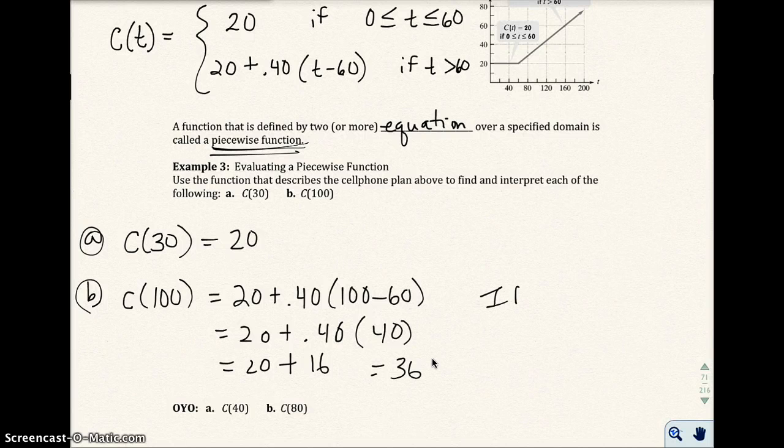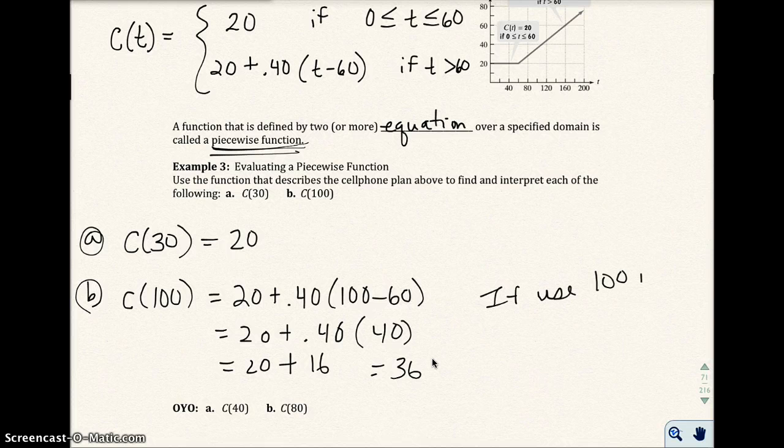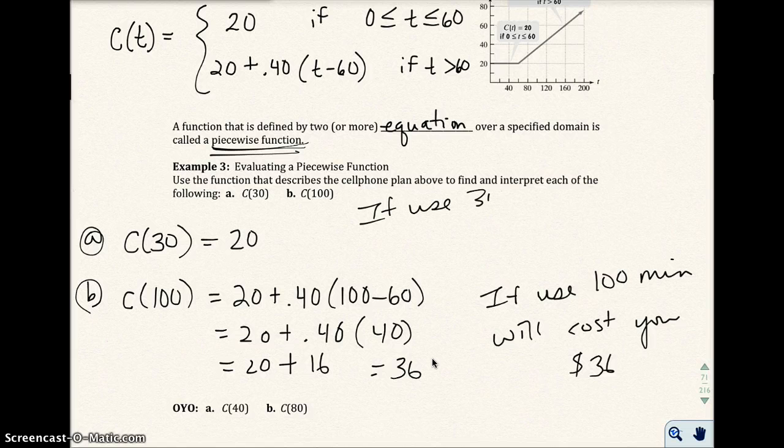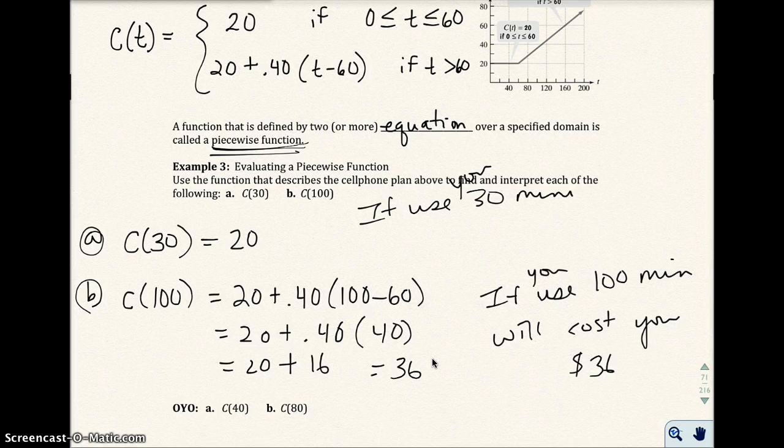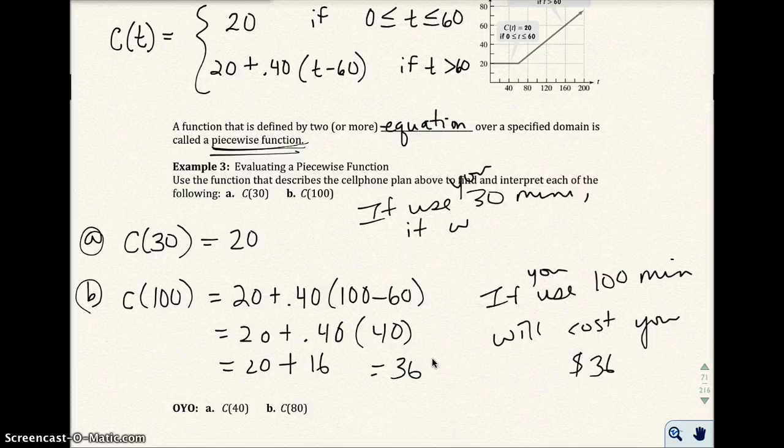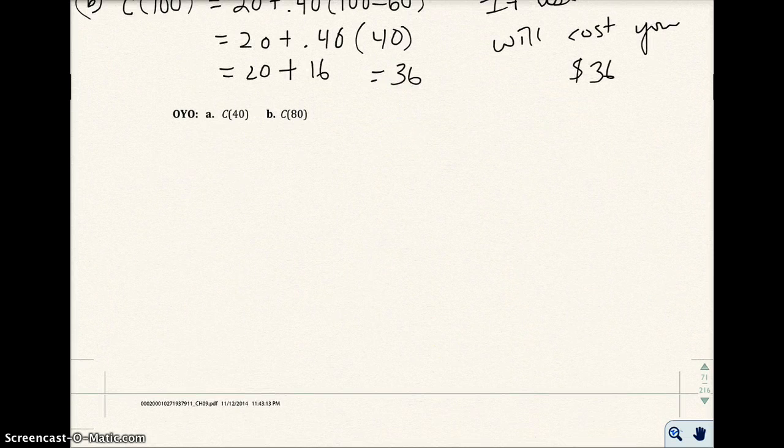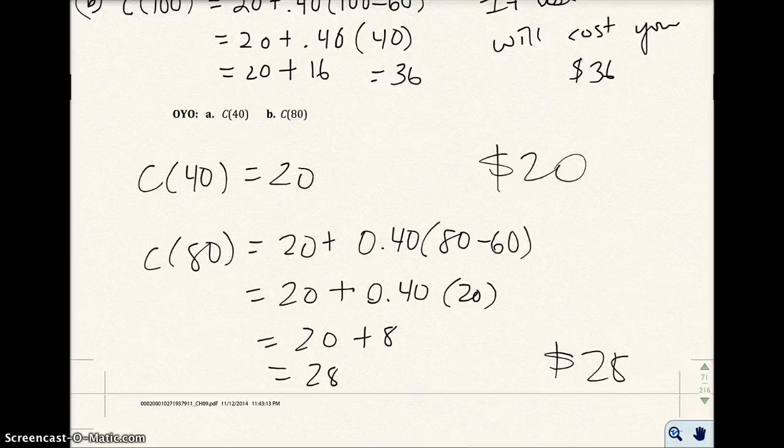You're going to pay $0.40 for each additional minute above the 60. That's the 40 minutes, that's where the 40 comes from. That's why we have to do 100 minus 60. So when I do that, I get $20 plus 16, which is $36. So if you use 100 minutes, it will cost you $36. On your own, go ahead and do A and B. If you use 40 minutes, it's $20, and if you use 80 minutes, it's $28.